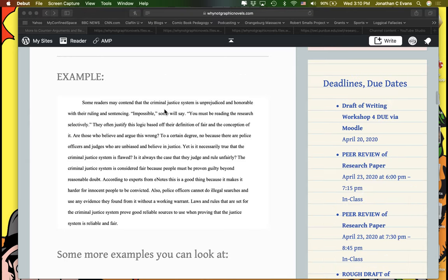Now, I went ahead and did a quick example here, and I want to note really the opening lines here. Some readers may contend that the criminal justice system is unprejudiced and honorable with their ruling and sentencing. Right off the bat, this is an excellent transition. Some readers may contend. It is clearly indicating that we are now moving into a phase where we are speculating on what somebody else might say.